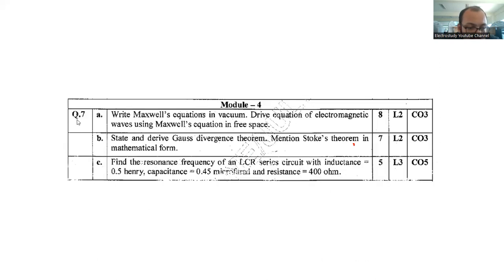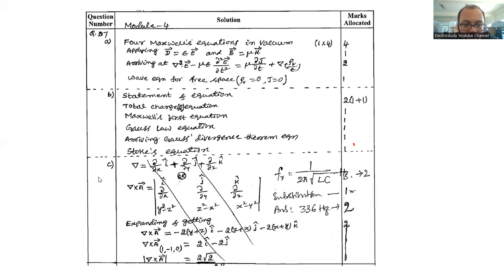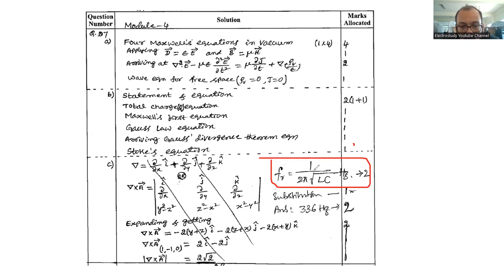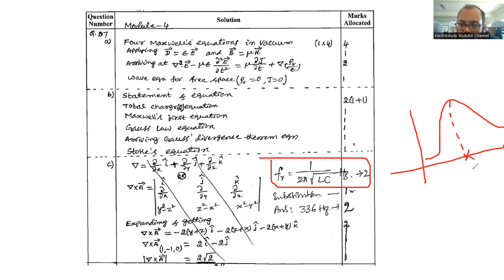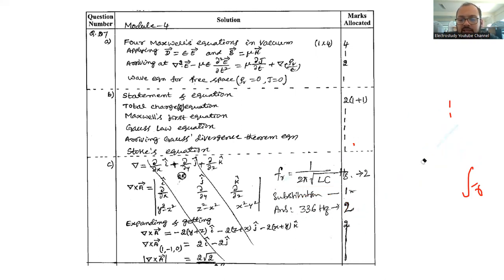Question number 7c: Find the resonance frequency of an LCR series circuit with inductance 0.500 H, capacitance 0.45 microfarads, and resistance with 400 volts supply. Apply the resonance condition. The formula is fr = 1/(2π√(LC)), which you may have learned in plus-2 classes. Substitute all values to get the answer: 336 Hz. This is a straightforward direct substitution question.